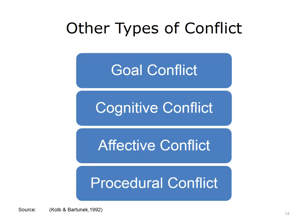Coalb and Bartunek present four basic types of conflict as yet another way to conceptualize and classify conflict. Their conceptualization includes the following types of conflict — goal conflict, cognitive conflict, affective conflict, and procedural conflict. These types of conflict can occur simultaneously and are not mutually exclusive. Let's explore these types of conflict a little more over the next few slides.